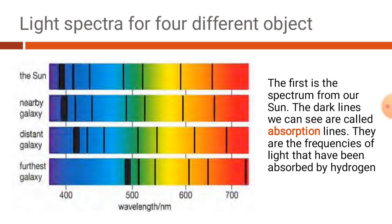This one belongs to the sun, this one belongs to a nearby galaxy, this one belongs to a distant galaxy, and the last one belongs to the farthest galaxy — a galaxy which is very far away from our earth. There is a difference in all these spectra: you can see black-colored dark lines placed in different positions on each spectrum. Based on this we are going to decide the direction and speed of movement of the star.